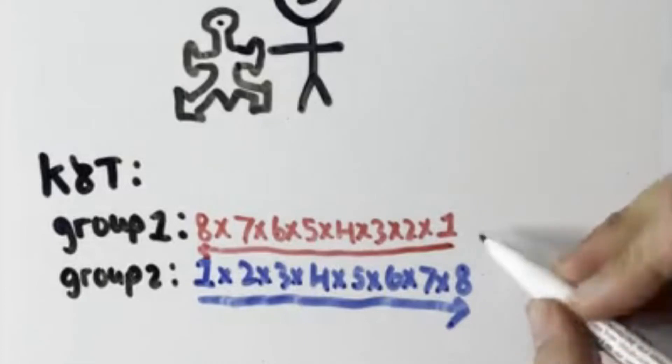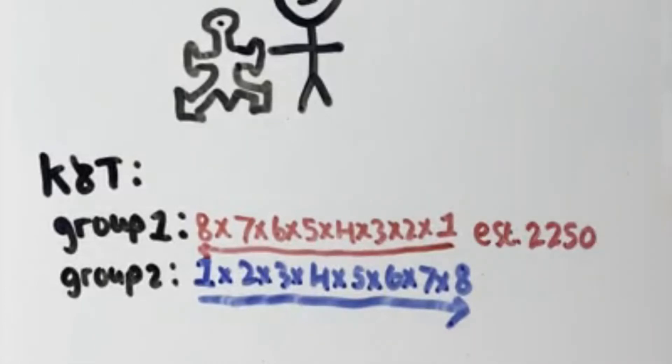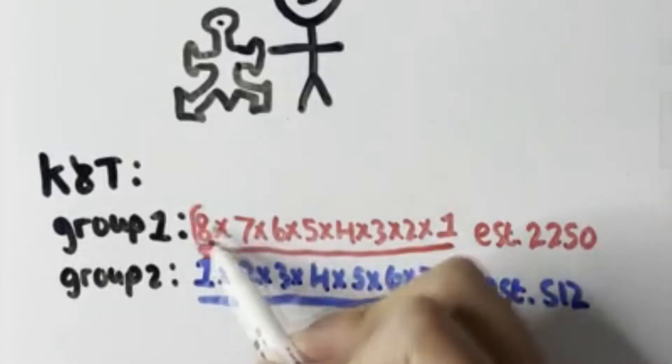The students gave an average estimate of 2250 for the first equation and an average estimate of 512 for the second equation. They estimated the first equation to be larger simply because it began with a bigger number.